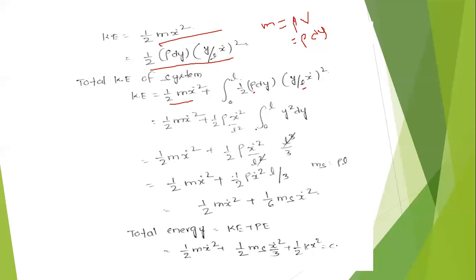Integrating from 0 to L: ∫₀ᴸ y²·Dy = L³/3. So KE_spring simplifies to ½·ρ·ẋ²·(L/3). That means ½·m_s·ẋ² — where mass of the spring m_s = ρ·L. The total kinetic energy of the spring is (1/6)·m_s·ẋ², since ρ·L = m_s gives (1/6)·m_s·ẋ².